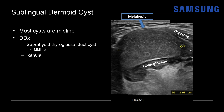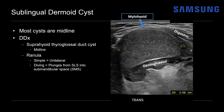A ranula is a mucus retention cyst arising from the sublingual or minor salivary glands. Simple ranulas are unilateral, located within the sublingual gland at the lateral margins of the floor of the mouth. A diving ranula plunges from the sublingual space through the mylohyoid into the submandibular space — so if you see a mass bounded by the mylohyoid, it's not a diving ranula. An abscess can have an overlapping appearance but the patient will typically have a clinical history pointing to oral cavity infection. Lymphangiomas can also occur at the floor of the mouth but are more common in the submandibular space, as opposed to the sublingual space, which is superior to the mylohyoid.